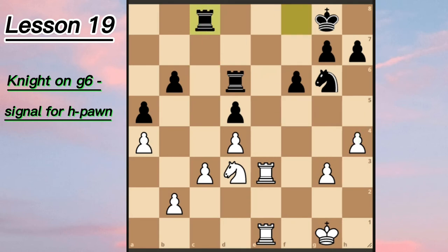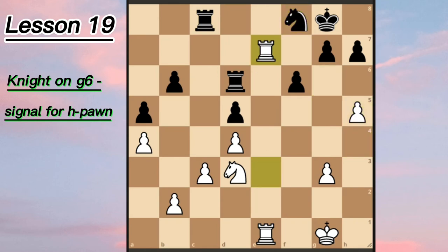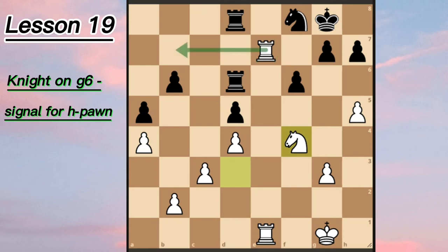Botvinnik exchanged the queens and played h5 anyway, then rook to e7, followed by knight f4. Here Black already resigned. White is just going to double the rooks on the seventh rank and Black is completely suppressed.